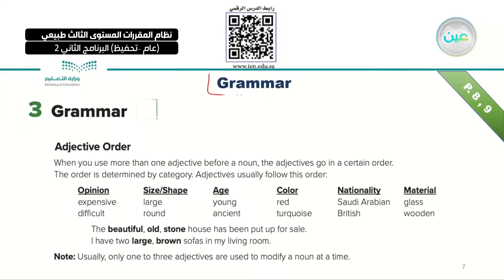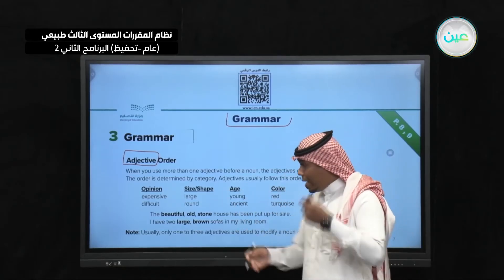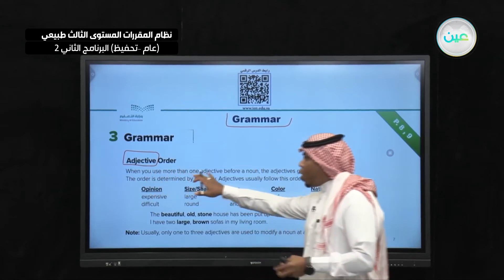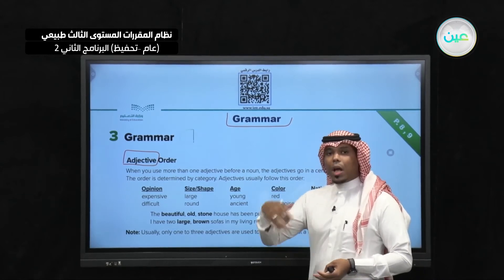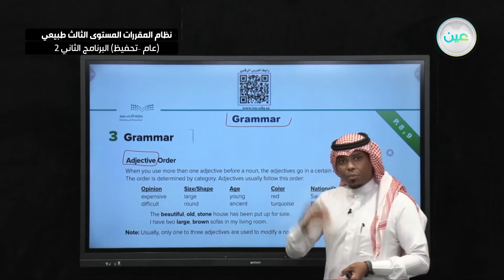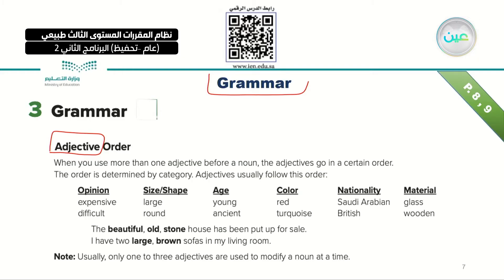Now we will start our second point, which is grammar. We are talking about adjectives — specifically, how we can order adjectives. When you use more than one adjective before a noun, the adjectives go in a certain order. You cannot place them randomly; you should stick to a certain order.